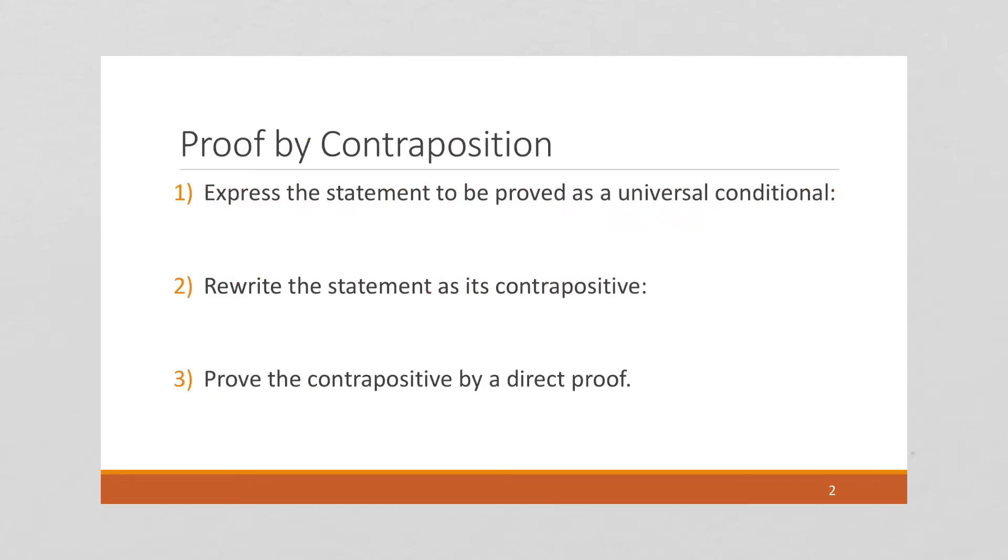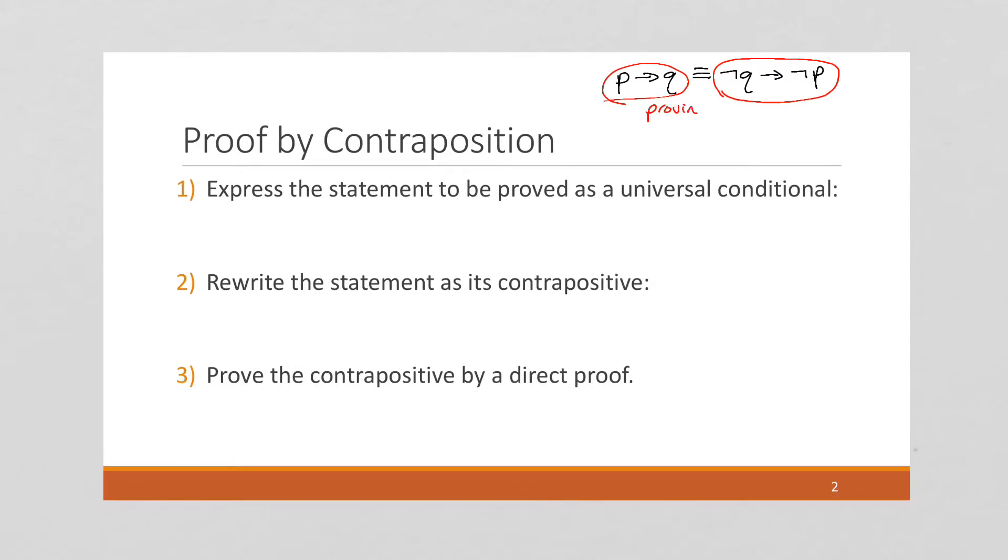Proof by contraposition is probably the easiest of all three types of proofs if you're comfortable using a direct proof. The idea behind a proof by contraposition is, if you recall, the statement is equivalent to its contrapositive. So if proving the original statement is difficult directly, we can always convert the statement into its contrapositive and prove that instead. And proving one is the same as proving the other because they are equivalent.